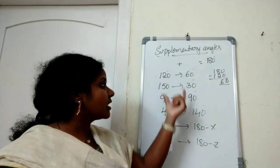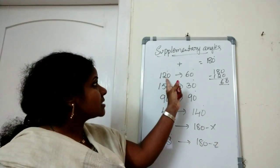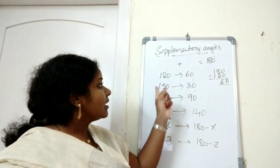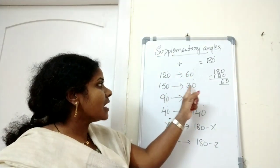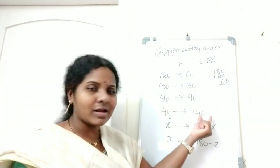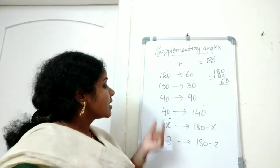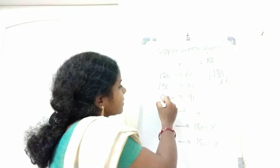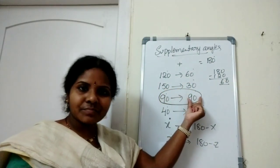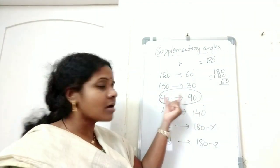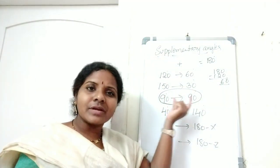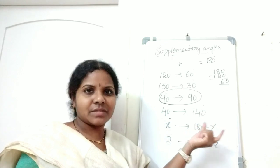If we observe here, this angle is 120 and 60. Here in this pair, 150 and 30. In this pair, 90 and 90. Here 40 and 140. The two right angles are always supplementary to each other. Two right angles are always supplementary to each other. What is the supplementary angle of 90 degrees? 90 degrees.